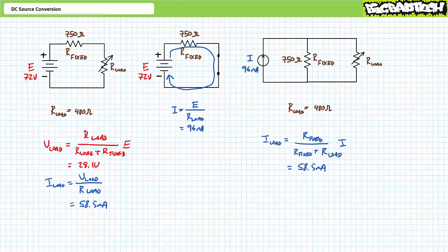A subsequent application of Ohm's law demonstrates voltage across the variable load resistor will be 28.1 volts. Equivalency has indeed been maintained, and the load resistance is none the wiser that the original voltage source in series with the fixed resistance has been swapped out for a current source in parallel with a fixed resistance. Note that when performing source conversion, it's important to maintain original polarity — the voltage source positive terminal points up, as does the current source's directional arrow, ensuring the same direction of current flow for both configurations.